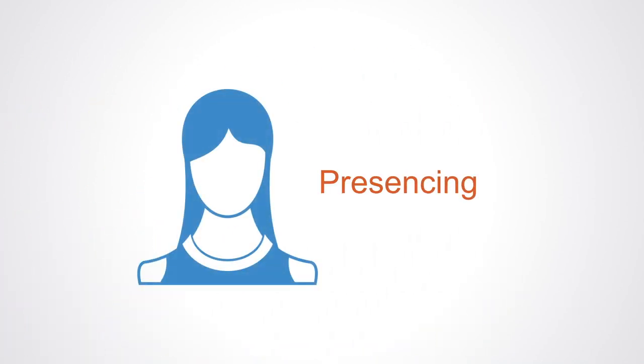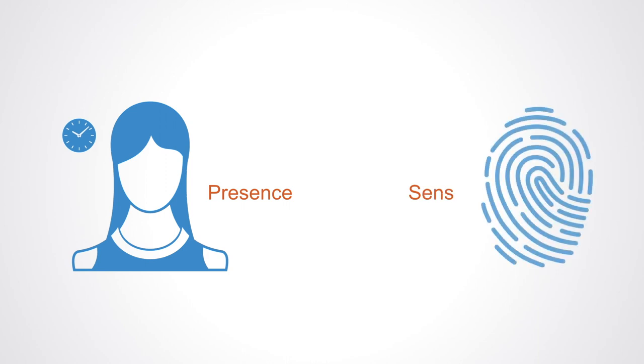The author of the Theory U concept expresses it as a process or journey, which is also described as presencing, a combination of sensing and presence. It is a method that involves a number of concrete steps along the U diagram.